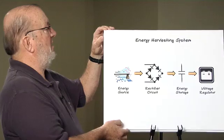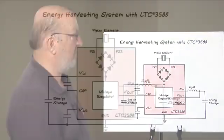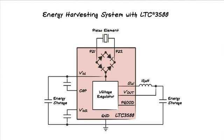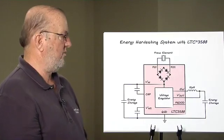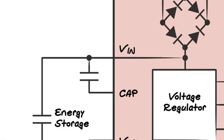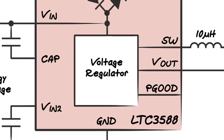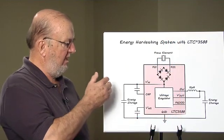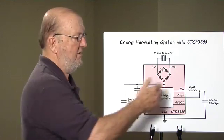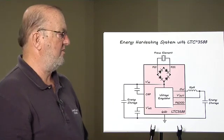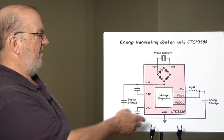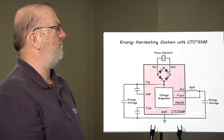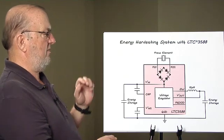The LT3588 is a complete energy harvesting solution for high impedance sources such as piezoelectric elements. Within the LT3588 we have the rectifier circuit, a low current under voltage detection circuit, and the DC to DC regulator which converts the energy stored from the input storage device and transfers that charge to an output storage device. We have all the electronics within this to finish a complete energy harvesting system.